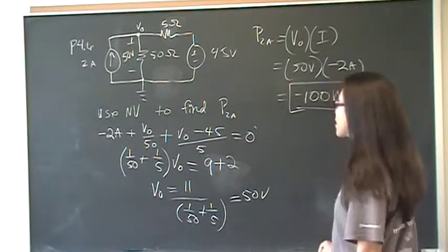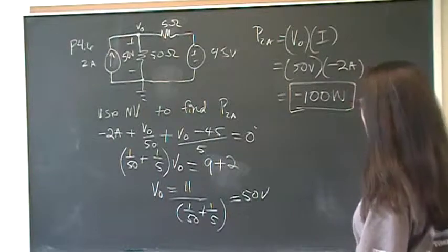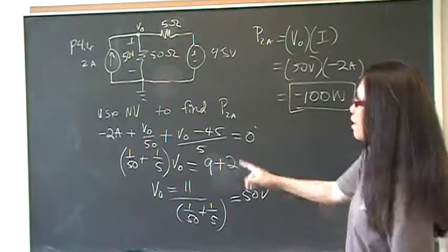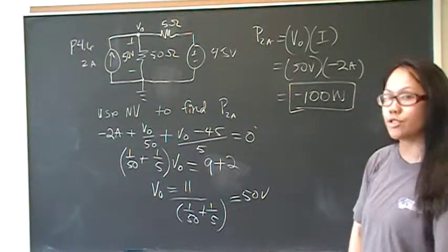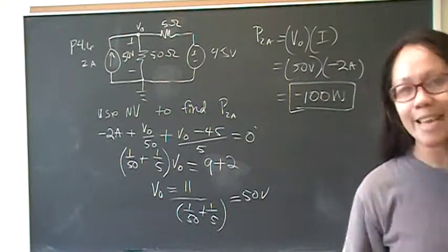So, the power that's being extracted by the 2 amp current source is negative 100 watts, which means the current source is delivering 100 watts to the circuit. The end.